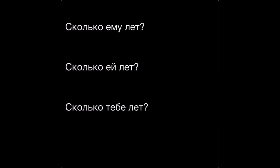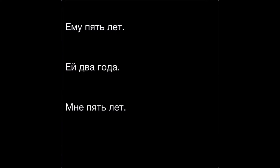If you look carefully, you might notice that there's no grammatical subject in these questions — nothing in the nominative case. Instead, literally, we're asking how many to someone, of years, using the dative case for the person whose age we're talking about. And similarly, in the answer, the person is in the dative case with the number of years following.